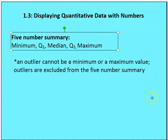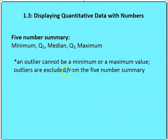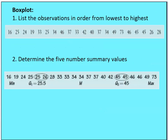Let's take a look at how to get that five-number summary with an example — we're going to create a box plot. I have a set of observations that are not in order from lowest to highest, so I'm going to reorder that list from 16 to 73. I'm going to locate the median, then locate the first quartile at 25 and a half, and the third quartile at 45. Then I'll determine if 73 and 16 are outliers — I believe they're not — and include them as part of my five-number summary.